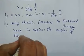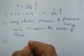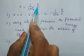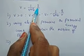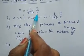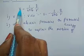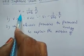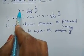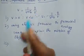Third point: the potential due to a positive charge decreases if the distance increases. For the negative charge, the potential increases if the distance also increases.